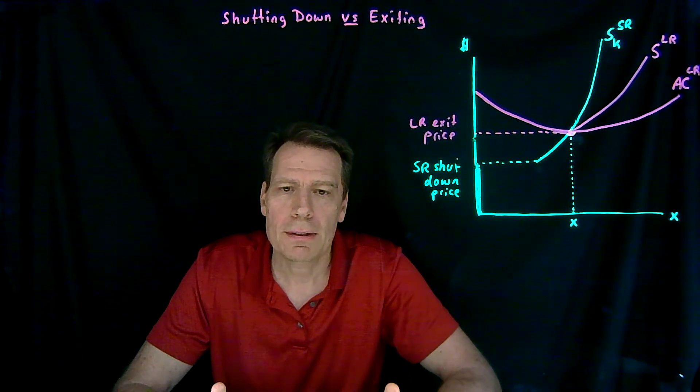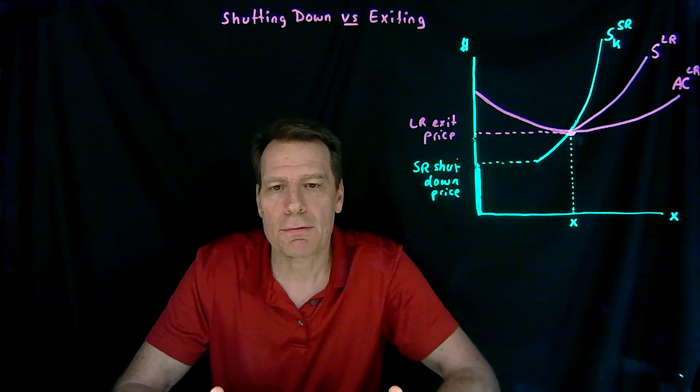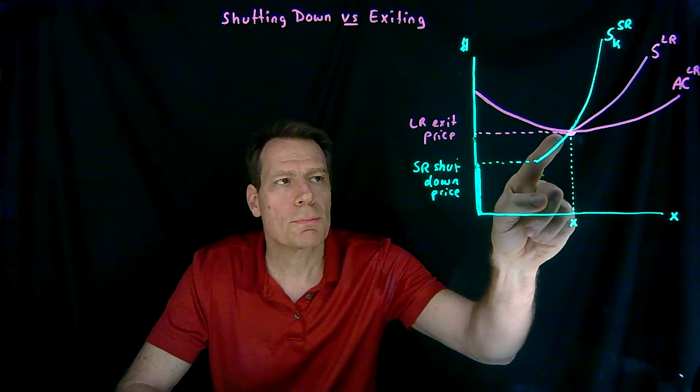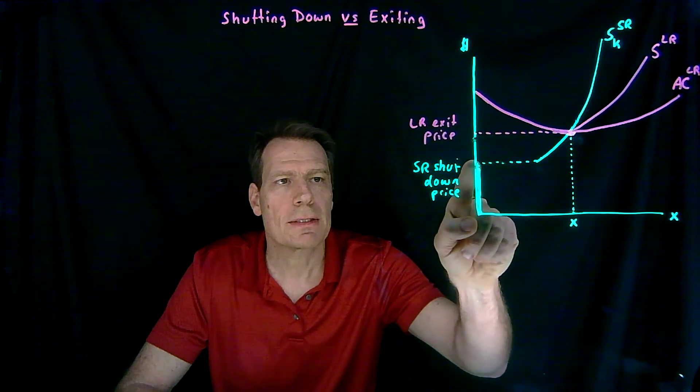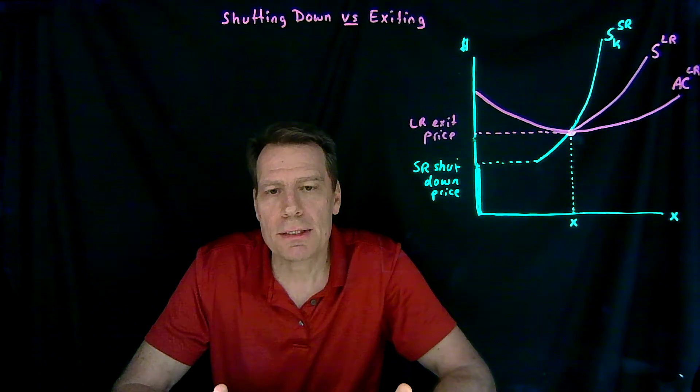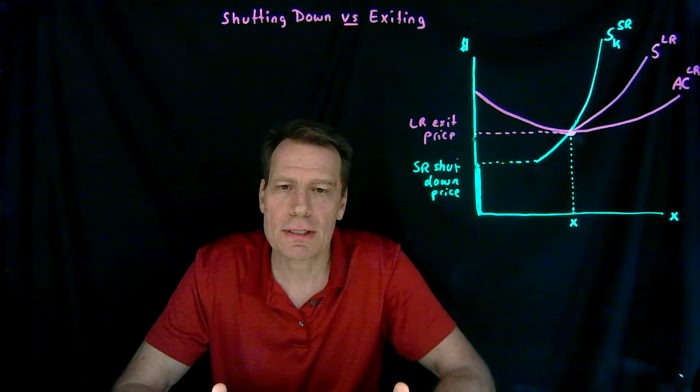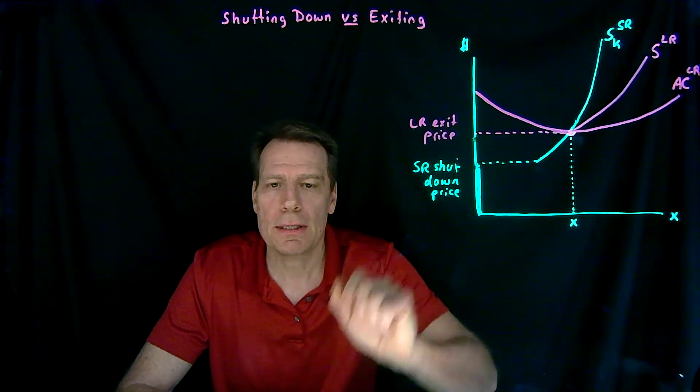But in the short run, it can't liquidate its capital yet. It's still stuck with the fixed level of capital. So in the short run, it will continue to produce so long as the price is above the short-run shutdown price. It makes sense for the firm to continue to produce in the short run while it has that fixed level of capital, as long as the price is in between here.